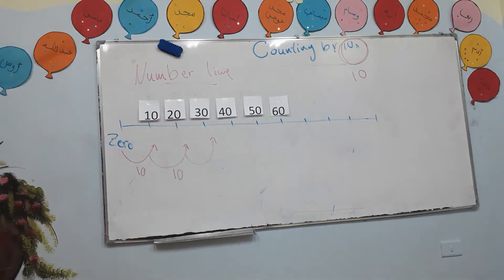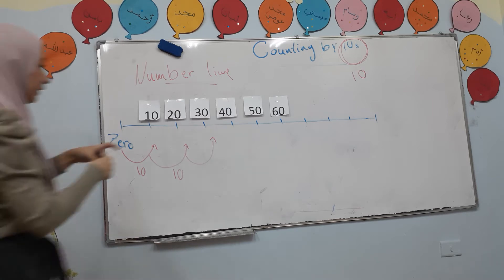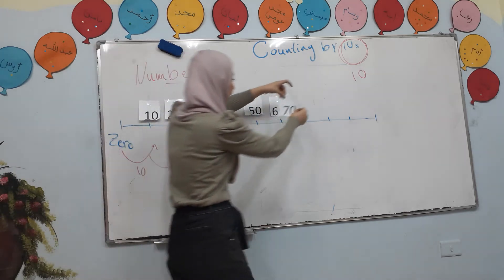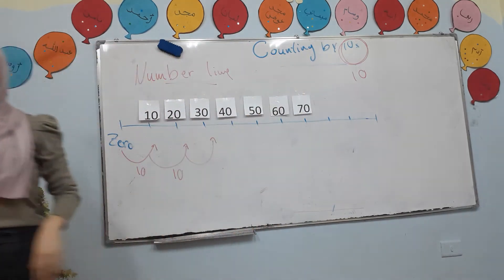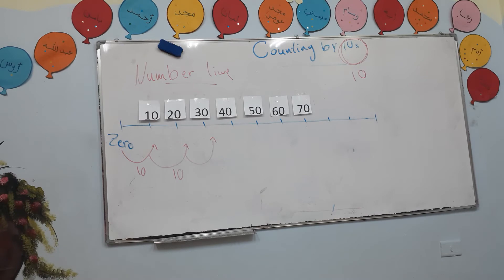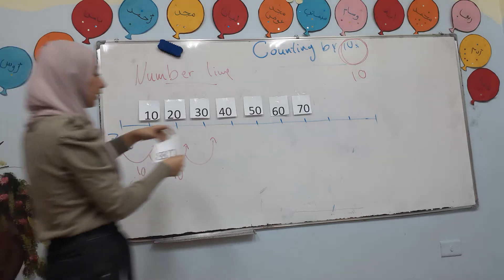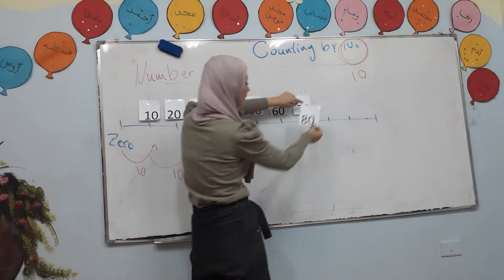What's the number that comes after 60 if I count by 10? 70! Excellent, bravo, good job! What's the number that comes after 70 if I count by 10? If I count by 10, what's the number after 70?